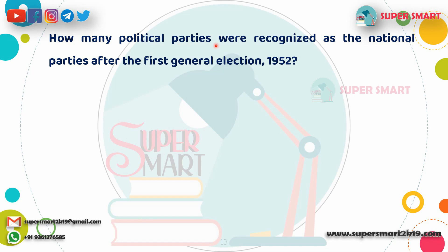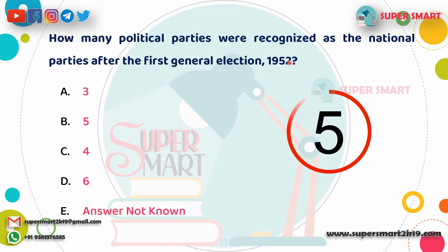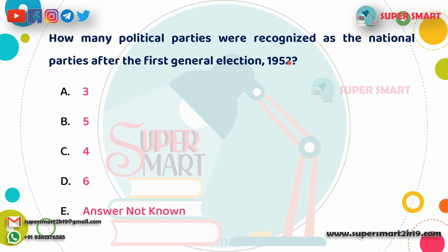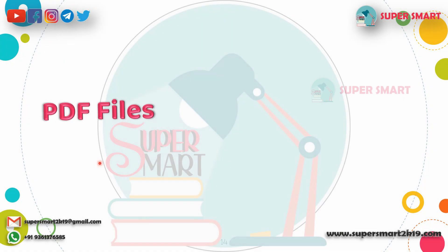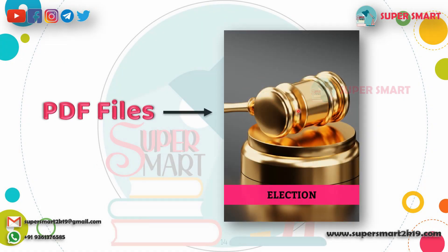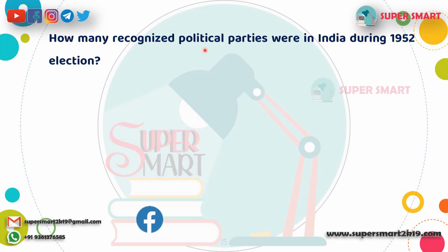How many political parties were recognized as national parties after the first general election of 1952? The 1952 general election recognized a number of parties as national parties.